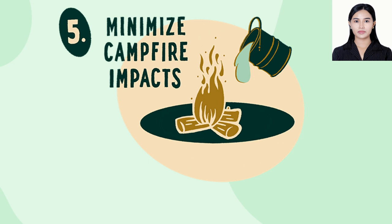Principle number five: minimize campfire impacts. Use a lightweight stove for cooking. Campfires can cause lasting impacts. If fires are permitted, use fire rings or mound fires that are already set up. Keep fires small and use only sticks from the ground that can be broken by hand. Avoid making large fires that can get out of control. No burning of plastics or other substances that emit toxic fumes. Burn all wood to ash and make sure fires are completely out. Scatter the cool ash.